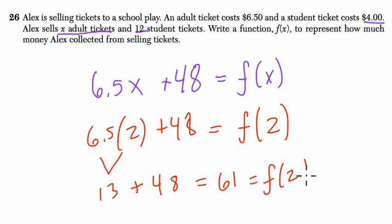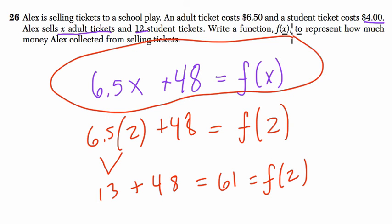So that would be the value for two adults - the total money collected if two adults attend. And that's our equation right there. Thanks.